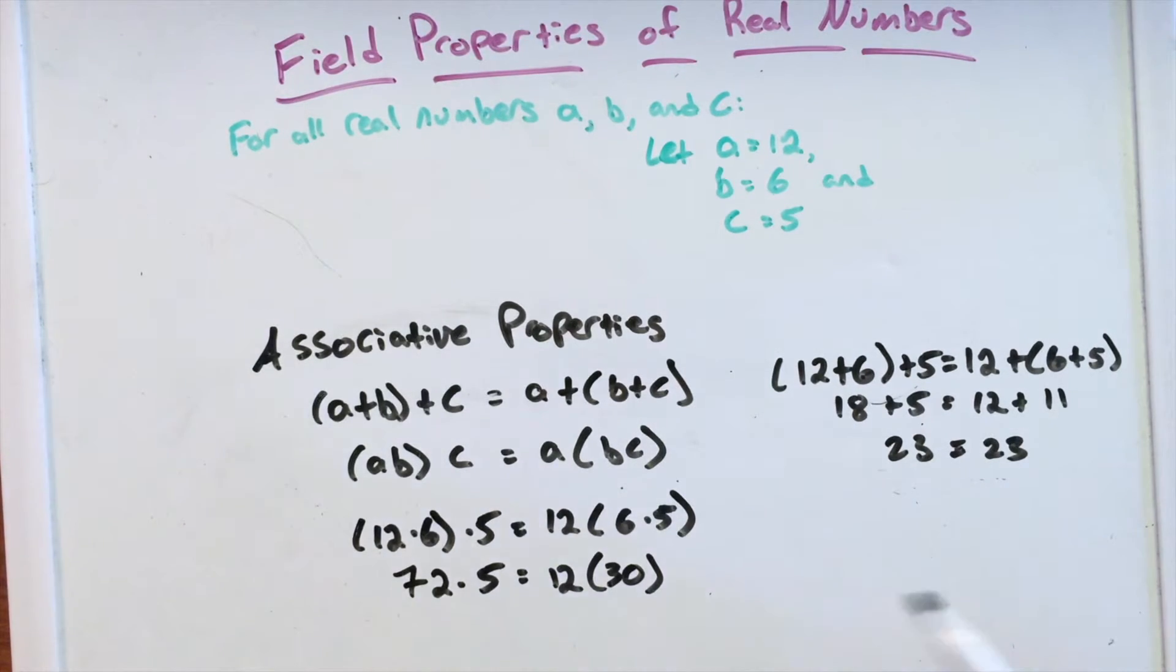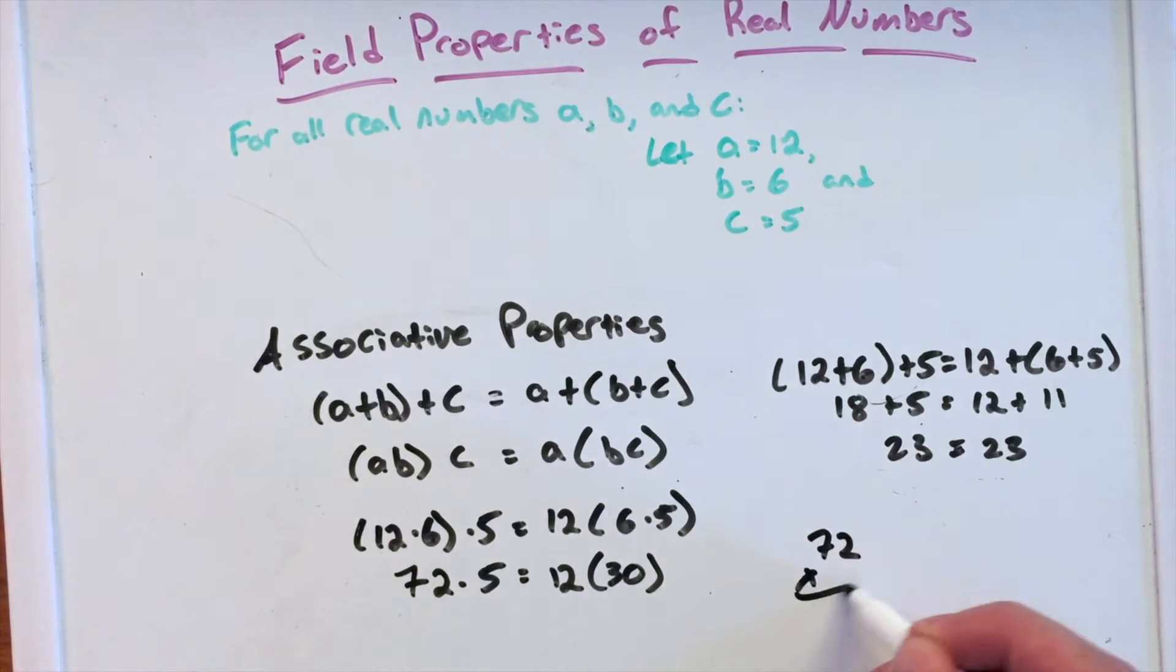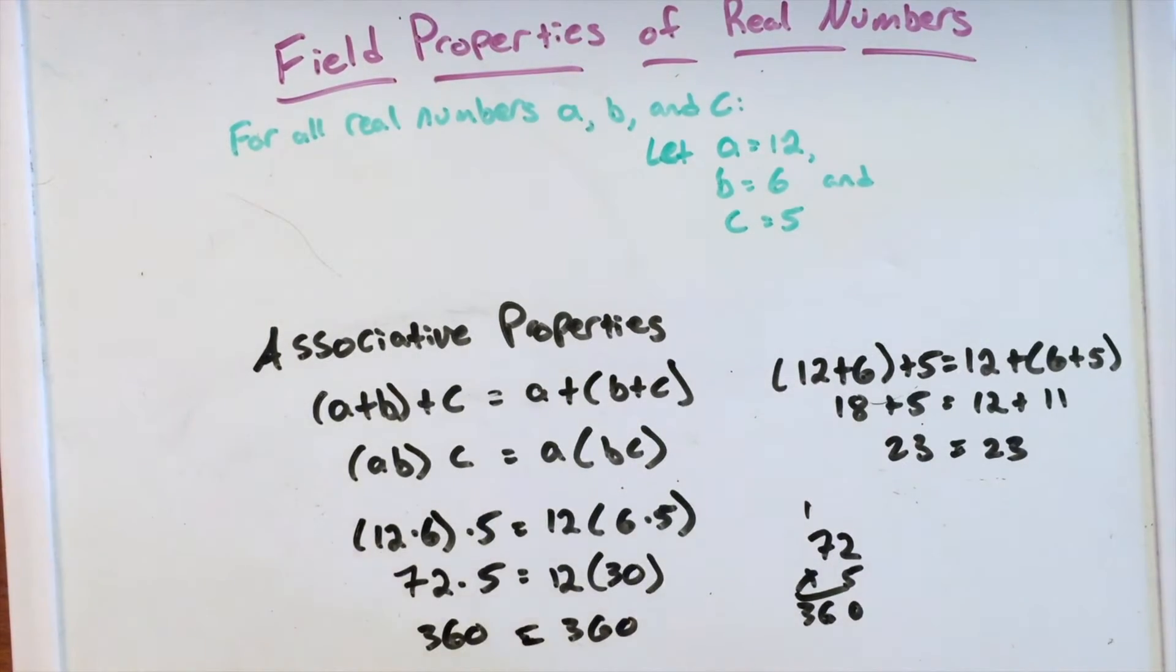They're the same thing on both sides here. And we can solve that if you want to really quickly on the side. 0 carry the 1 plus 7, 35, 360. So we have 360 equals 360, and 12×30 gives us that 360. And if you want to do a quick way to think about it...